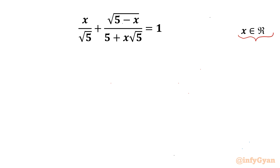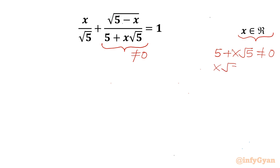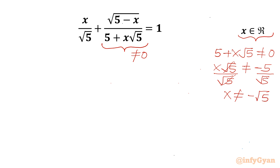Let us get started by considering that this denominator cannot be equal to 0. So 5 plus x times root 5 cannot be 0, which means x root 5 cannot be equal to minus 5. Dividing both sides by root 5, x cannot be equal to minus root 5. This is our rejected list.